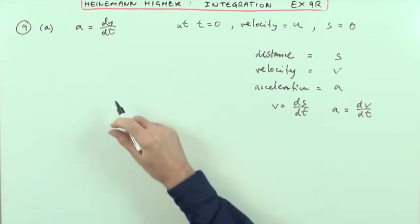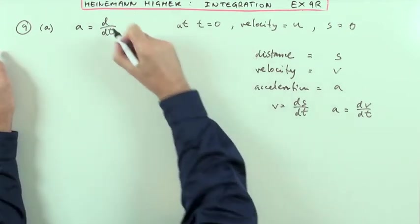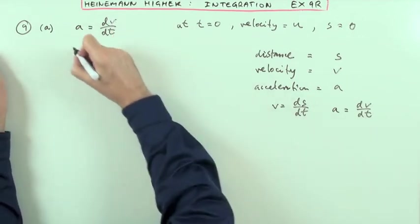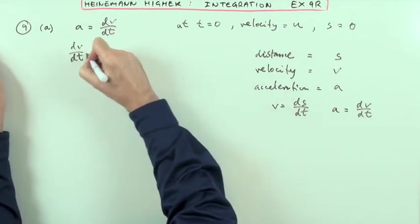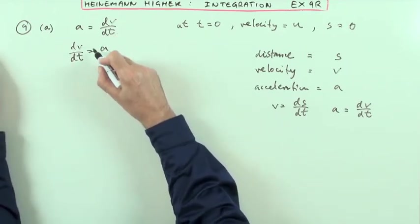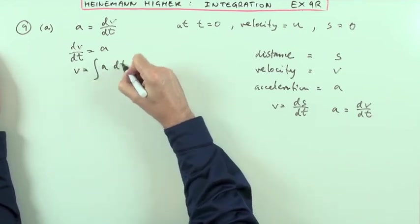Show that the velocity is v equals u plus at. Well, the first step's this. That says dy by dt, that must be a misprint. Because it's actually, the acceleration is dv. That's why it should have been a v. I'll just put it the other way around. dv by dt equals a. Now a doesn't involve t, it's just a constant. So that means that if I want to get back to v, it's going to be the integral of a dt.